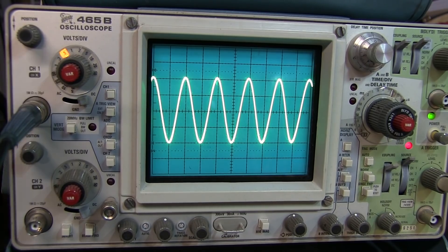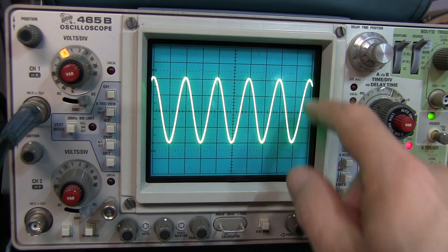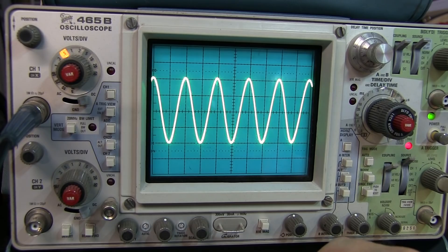Let's see, a half a volt per division. I've got one, two, three, four divisions, that's two volts peak to peak. That doesn't seem right. What the heck's going on here?